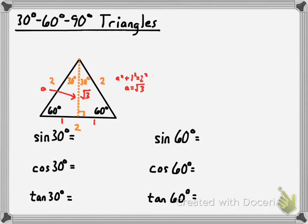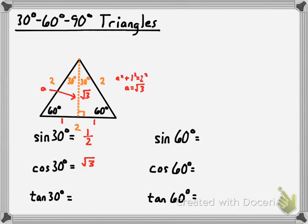Now let's use that to figure out the sine, cosine, and tangent of 30 degrees. Looking at the 30-degree angle in this triangle, the sine of that angle is the ratio between the opposite leg — which is 1 — and the hypotenuse, which is 2. So the sine of 30 degrees equals one-half. For the cosine of 30 degrees, the adjacent leg is the square root of 3 and the hypotenuse is 2, giving us the square root of 3 over 2. The tangent of 30 degrees is 1 over the square root of 3, which, written without a radical in the denominator, is the square root of 3 over 3.